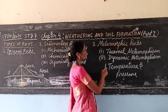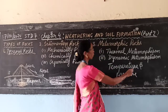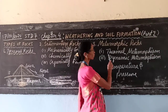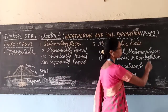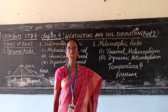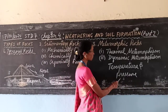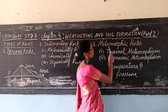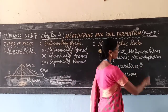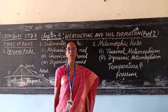Metamorphic rocks are also of two types. When very high temperature is applied to form metamorphic rocks, that process is known as thermal metamorphism, and the rocks formed are known as thermal metamorphic rocks. When very high pressure is applied to form metamorphic rocks, that is known as dynamic metamorphism, and the rocks formed are known as dynamic metamorphic rocks.